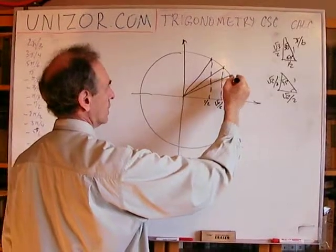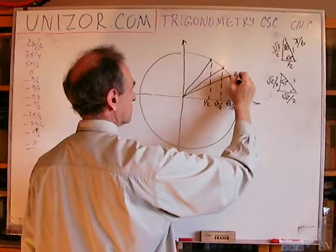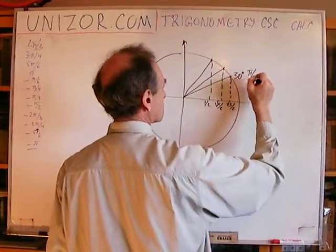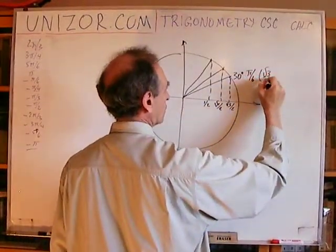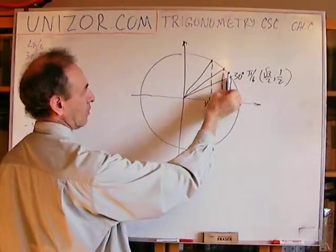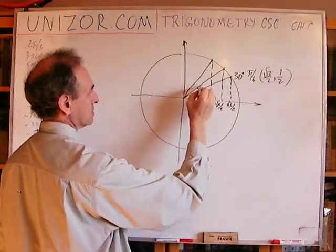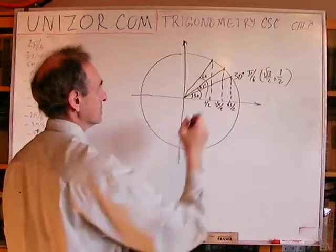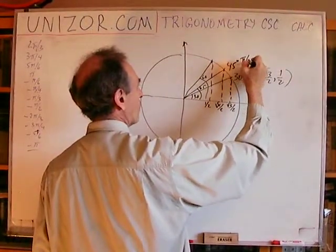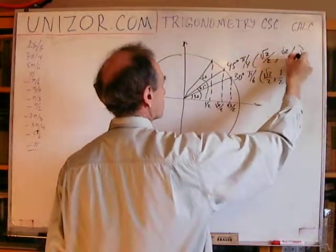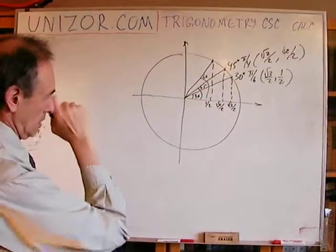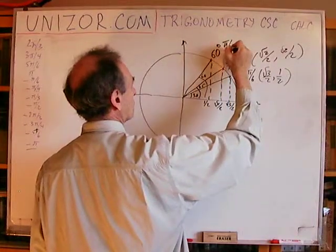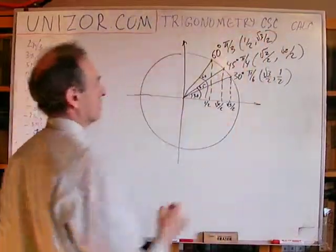The coordinate of the 30-degree point, which is pi over 6, has coordinates square root of three over two, one-half. For 45 degrees, which is pi over four, the coordinates are square root of two over two, square root of two over two — both catheters are equal to each other. Finally, for 60 degrees, pi over three, the abscissa is one-half and the ordinate is square root of three over two.